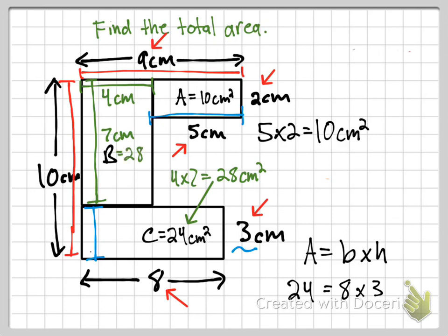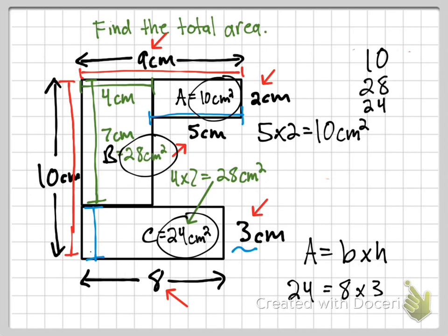To finalize, I add the three areas: 10 centimeters squared plus 28 centimeters squared plus 24 centimeters squared. That gives 10 plus 28 equals 38, and 38 plus 24 equals 62. So the total area is 62 centimeters squared.